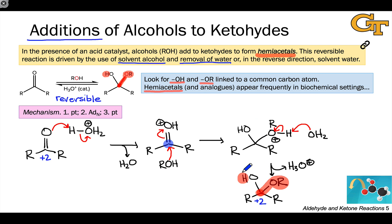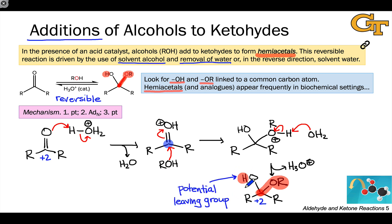The hemiacetal contains a hydroxyl group, and this has the potential to act as a leaving group. This is particularly true under acidic conditions, because if we could protonate this oxygen, that would turn this group into H₂O, potentially enabling the loss of water as a leaving group. That's where we'll pick up in the next video with the synthesis of acetals.